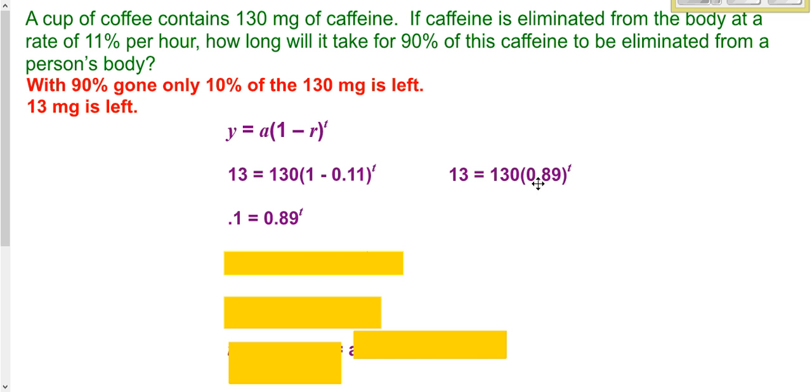The 130 does not. Remember, if you were working this out normally, you'd have to do the exponent before you could do the multiplication. So we've got to get rid of that 130. So we divide both sides by the 130. And that's where the 0.1 comes from. So we have 0.1 equals this. Now that we have the part with the exponent by itself, now we can use logarithms.